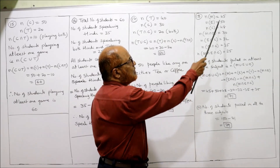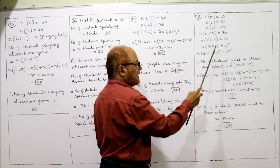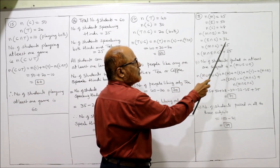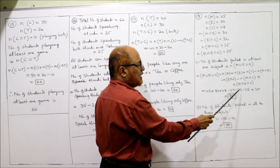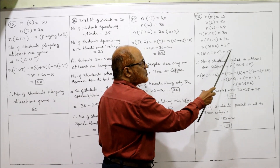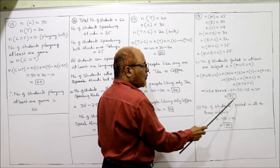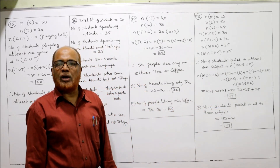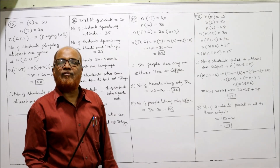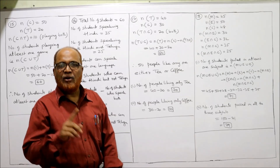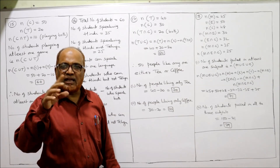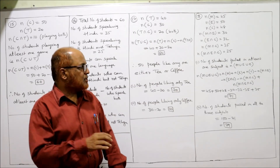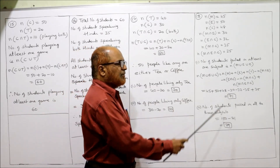Substituting all values: 45 + 50 + 48 − 30 − 32 − 35 + 25 = 71. So 71 students failed in any one of the subjects — either maths, economics, or commerce.